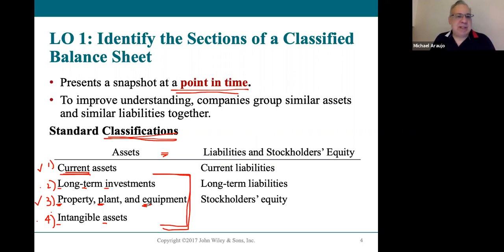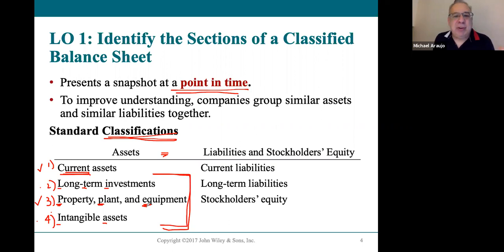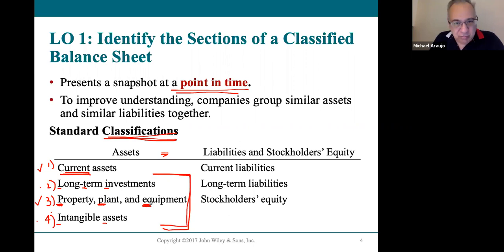These assets are used in the business right now. I can't possibly sell any pizza without my building, ovens, refrigeration system, or workstations. So property, plant, and equipment — these long-term assets — are used in the business now to sell whatever I'm selling.